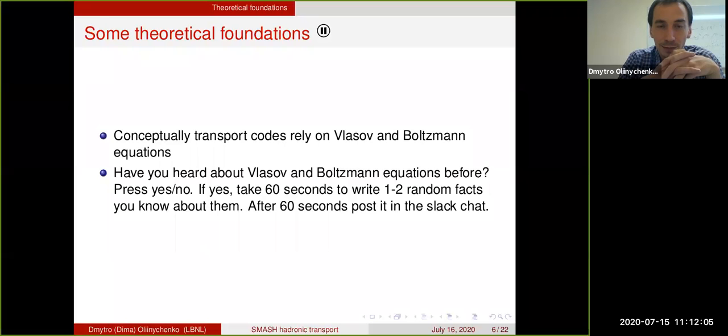Conceptually, most of the transport codes rely on Vlasov and Boltzmann equations. Sometimes not all transport people will agree with me on this because sometimes people say we are doing BBGKY equations, for example. But if you simplify BBGKY equations after some approximations, they will still become Vlasov and Boltzmann equations.